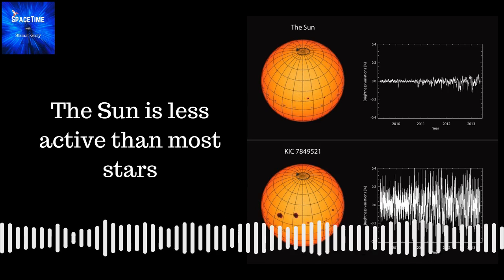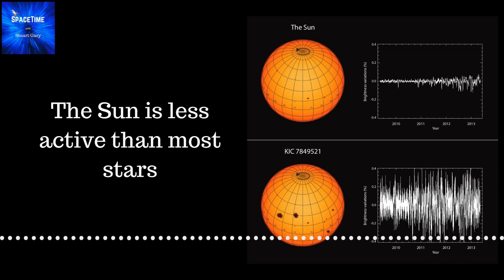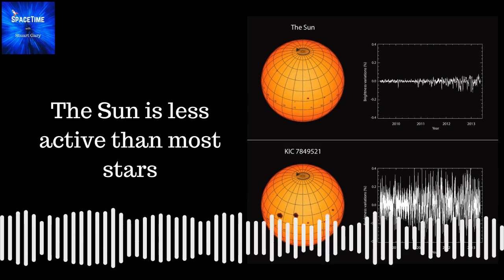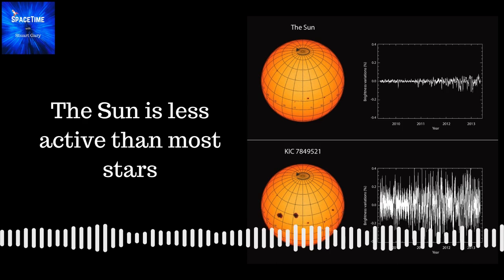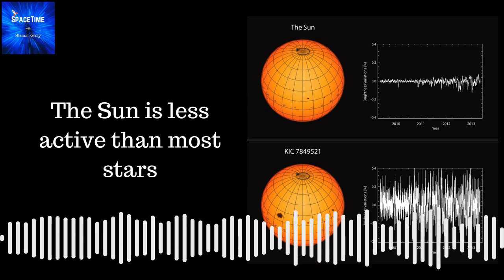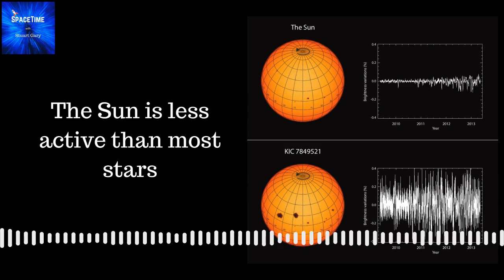However, it wasn't possible to determine the rotational period of all the stars observed in the Kepler data. To do this, scientists had to find certain periodically reappearing dips in a star's light curve, which can be traced back to star spots that darken the stellar surface, rotate out of the telescope's field of view, and then reappear after a fixed period of time.